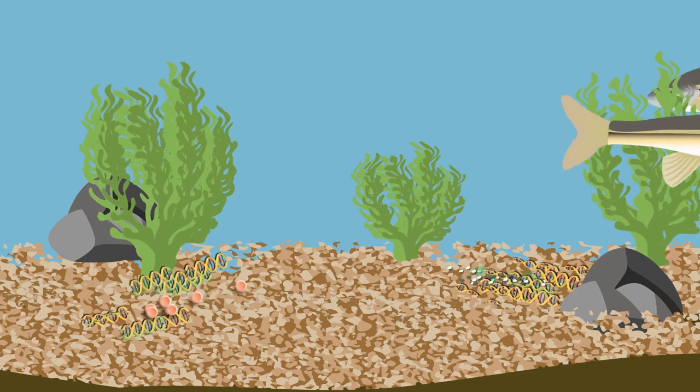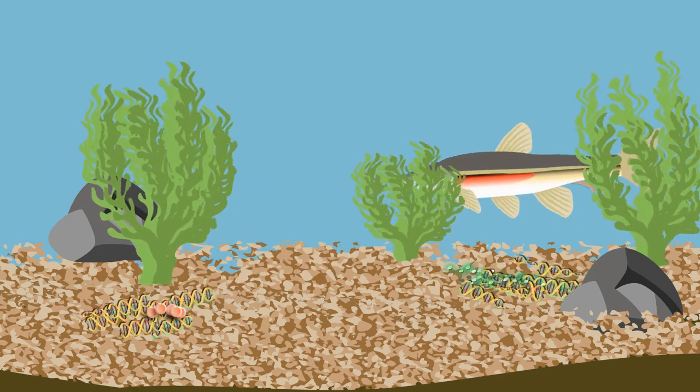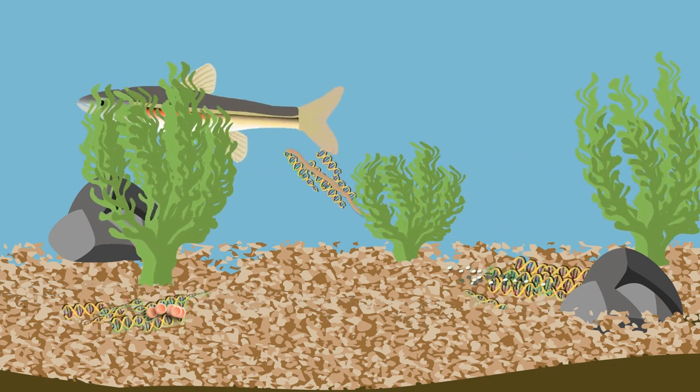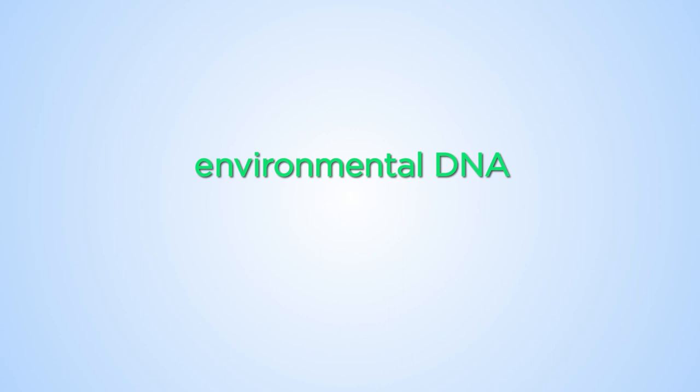Whenever an organism moves through its environment, it leaves behind fragments of DNA from skin, scales, feathers, fur, feces, and urine. This kind of DNA is called environmental DNA, or eDNA.